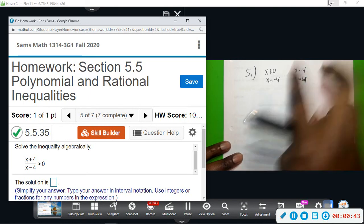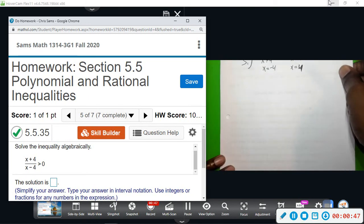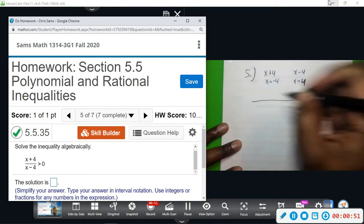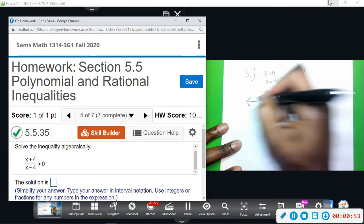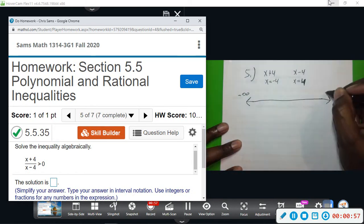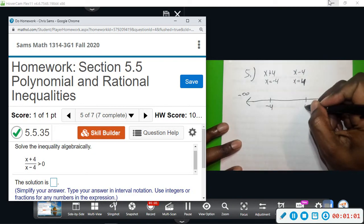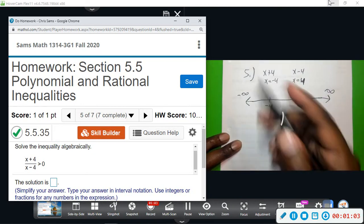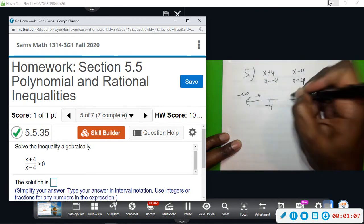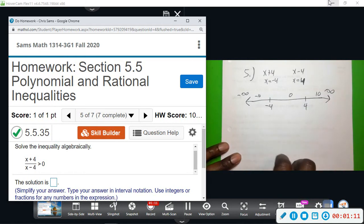Then we're going to make a number line and do the same thing, find out where it's positive or negative. So negative infinity, positive infinity, negative four, positive four. And let's just do negative 10 over here, zero, and positive 10. I like to try to use some big even numbers.